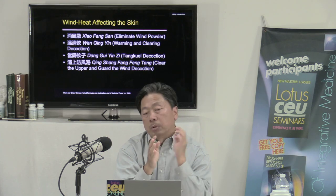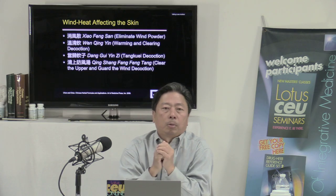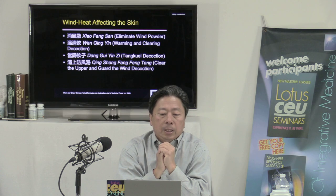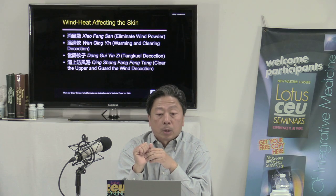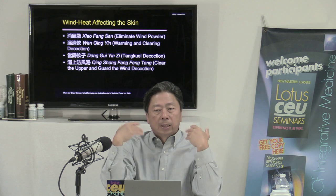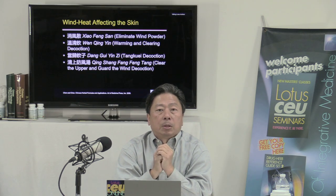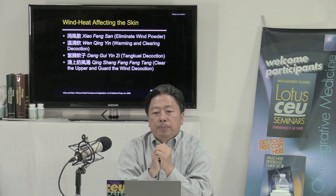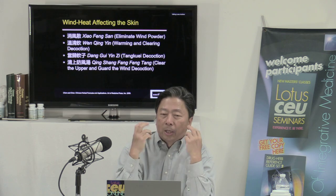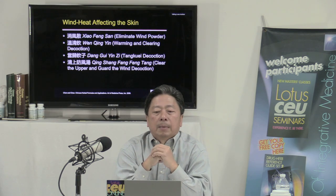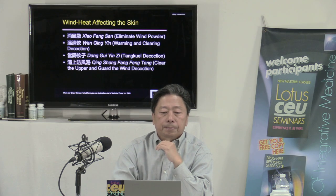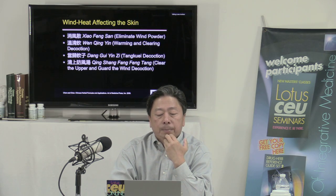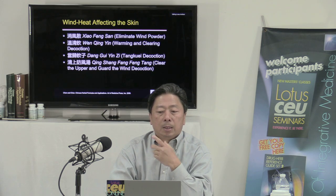If this is the type of problem the patient has, you might need to use Danggui Yin Zi to treat the cause from inside, and also Xiao Feng San to treat the symptom from outside. Sometimes you need to do both. Now let's zero in on one formula: Xiao Feng San. As you can see, most herbs in this formula are exterior-releasing herbs, and many of these herbs in the non-heat-clearing chapter also have significant anti-inflammatory, anti-allergic, anti-pruritic, and anti-histamine effect.